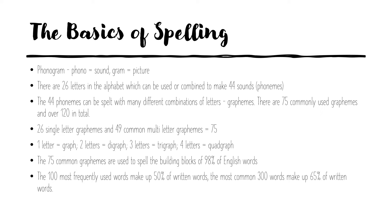Those 26 single letter graphemes plus 49 common multi-letter graphemes such as A-I and A-Y give us our 75 commonly used graphemes. Just a few technical words: a graph is one letter, two letters is called a digraph, three letters a trigraph, and four letters a quad graph. Just make sure you get the G in the middle — it's a bit tricky to say.